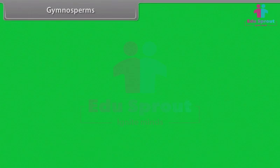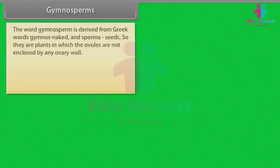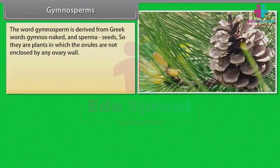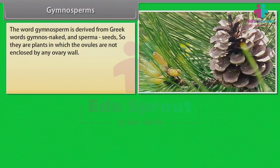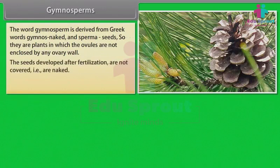Gymnosperms. The word Gymnosperm is derived from Greek words: Gymnos, meaning naked, and sperma, meaning seeds. So they are plants in which the ovules are not enclosed by any ovary wall. The seeds develop after fertilization and are not covered — that is, they are naked.